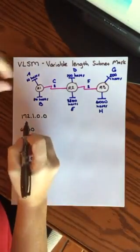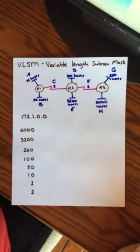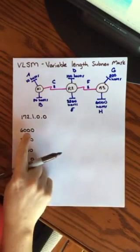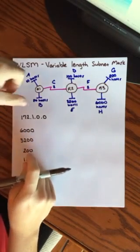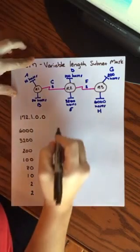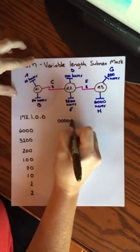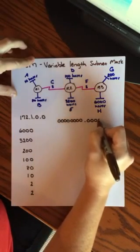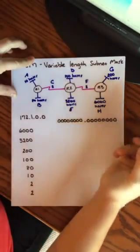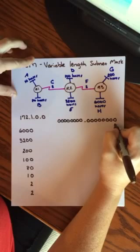Alright, so this is my starting network 172.1.0.0. The first thing I need to do is I need to determine what my CIDR is going to be for this network, for 6,000 hosts. So the way that you do that is you look at your host portion of this address and look at it in binary in order to determine your range.